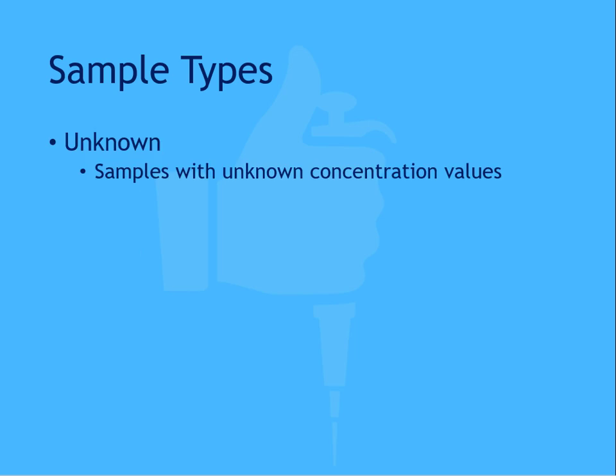The unknown sample type is used for patient or research samples. Each assay is designed to compute a meaningful result for each unknown sample, such as to quantify the presence of an antigen or to qualify the sample, for example to assign a positive or negative designation.